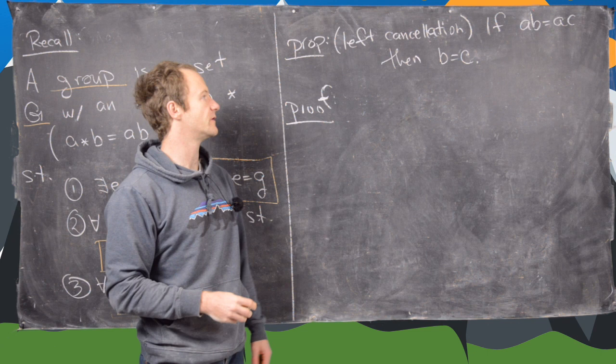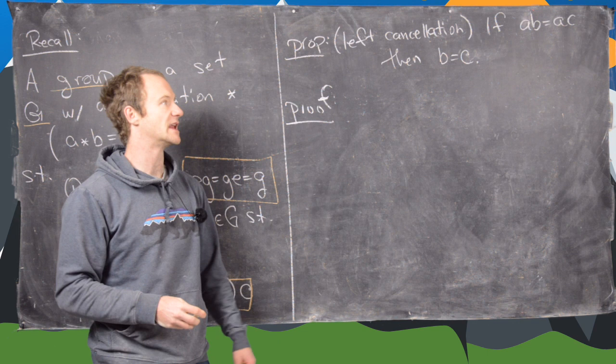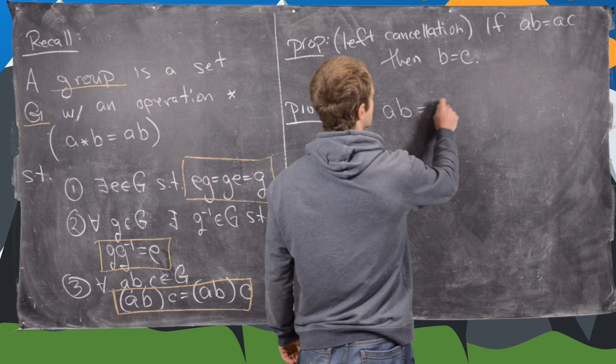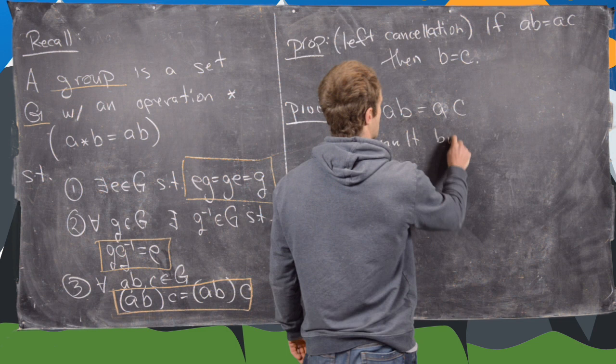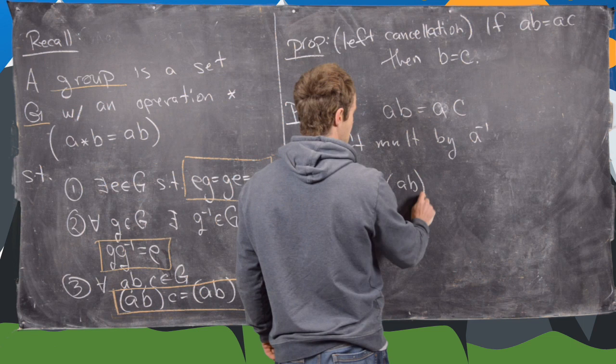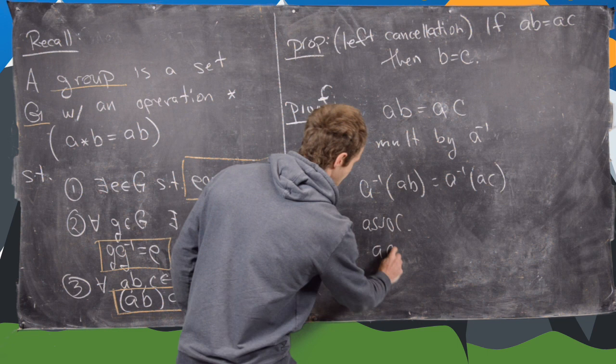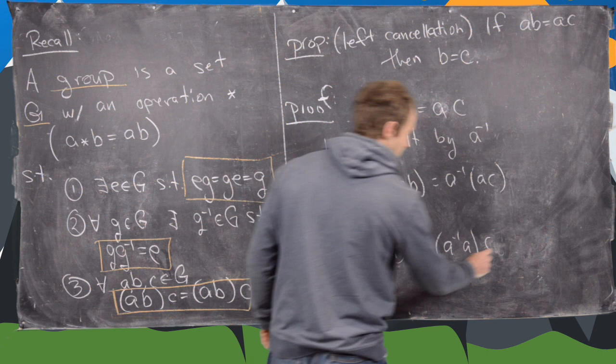So the final property that we want to prove in this video is called the left cancellation property and there is a right cancellation property too which I'll let you guys prove on your own. It's just as simple as this one and this says that if AB equals AC and A, B, and C are elements of some group then B equals C. So all we do is start with AB equals AC and then left multiply by A inverse so that gives us A inverse AB equals A inverse AC but now notice by associativity we have A inverse A times B equals A inverse AC but that's the same thing as B equals C because A times A inverse is the identity.